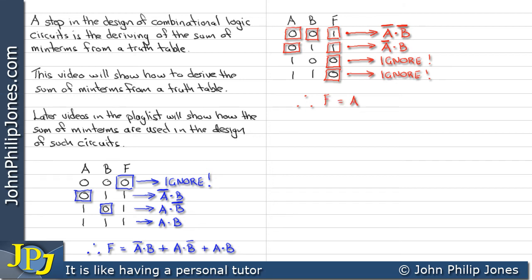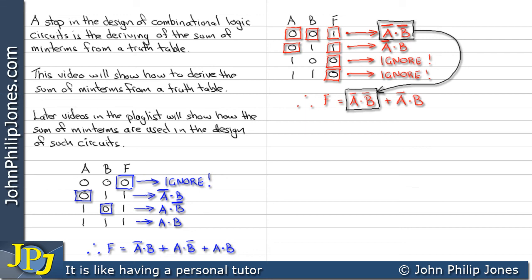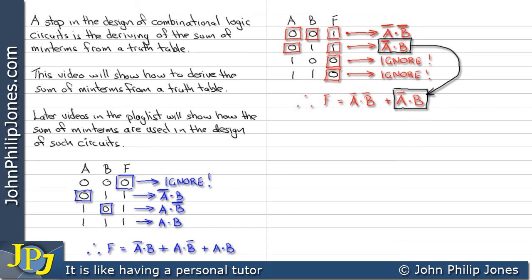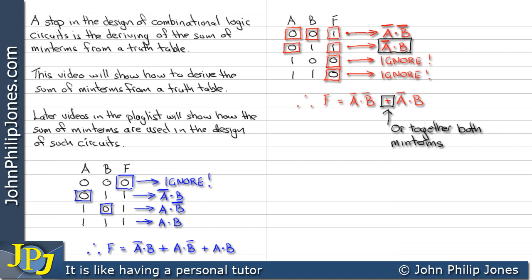Therefore, the sum of minterms is as follows. We've taken this first minterm and copied it down to this position. We've then taken this second minterm and copied that here as well. And then we've OR'd both minterms together, as you can see, using the OR symbol. All of this is referred to as the sum of minterms.